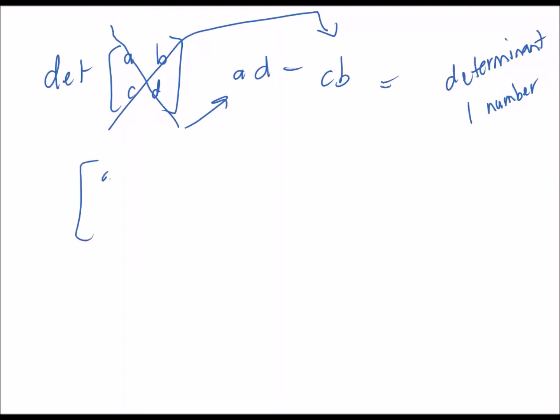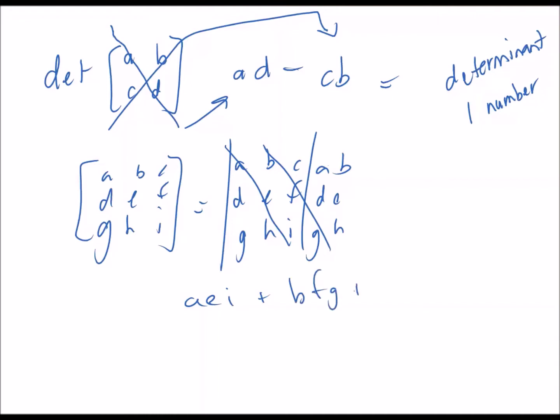For a 3x3 matrix [a b c; d e f; g h i], you rewrite the first two columns: a b, d e, g h. Then you calculate aei plus bfg plus cdh minus these ones - minus gec plus hfa plus idb.